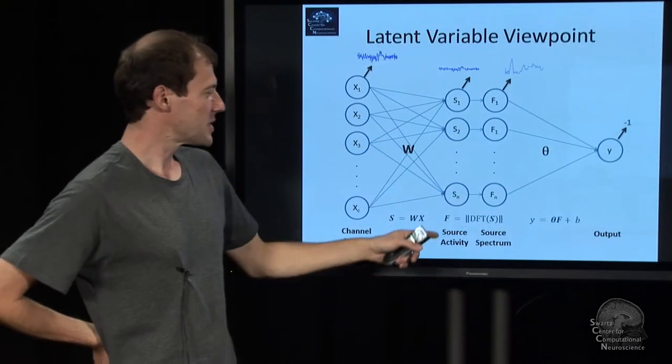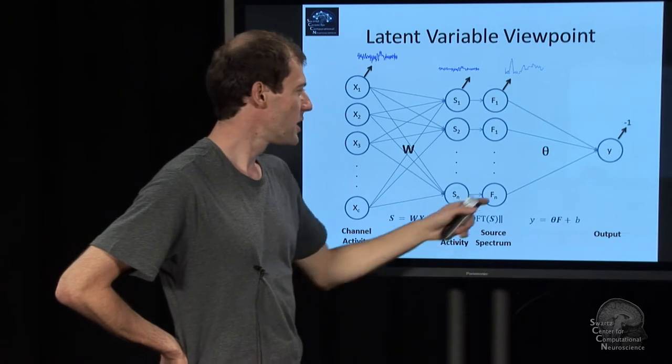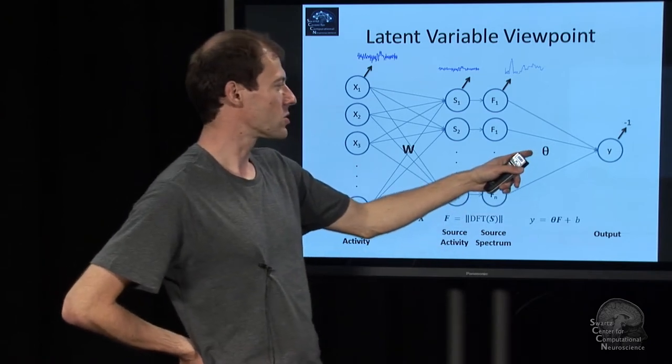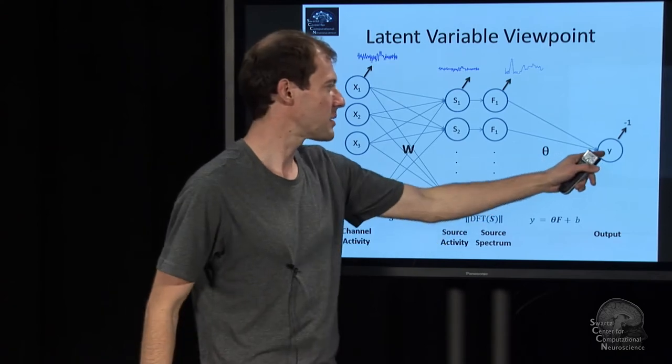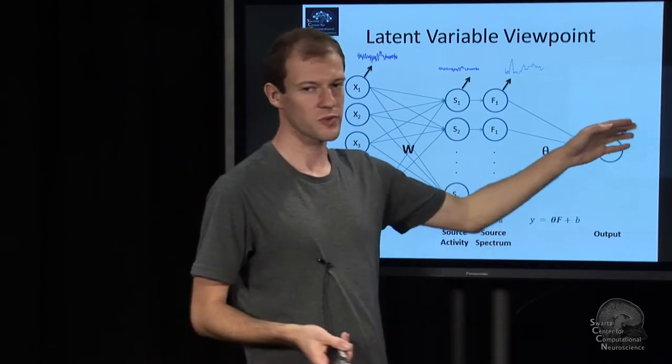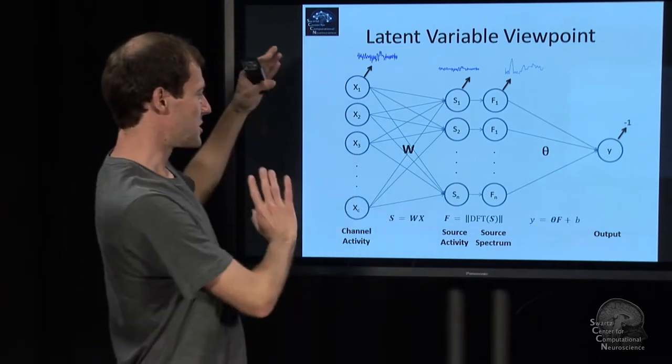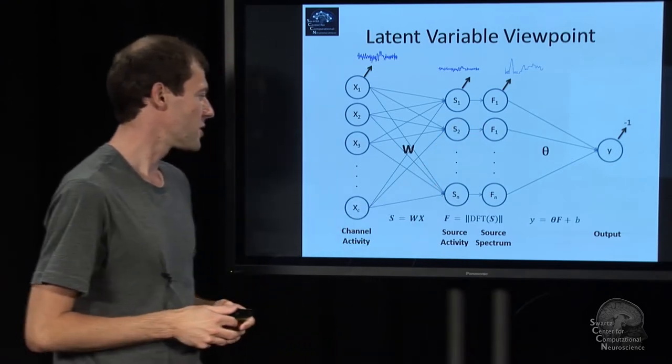We do our frequency transform here. And then we get the frequency representation as power. And then at the end, we have our linear classifier which maps it onto a one-dimensional value, a scalar. So a single trial is sent through this pipeline: linear map, linear map, nonlinear, and we're done.